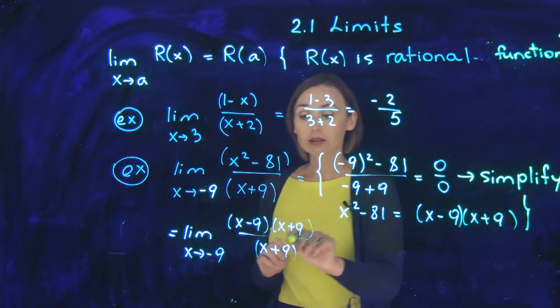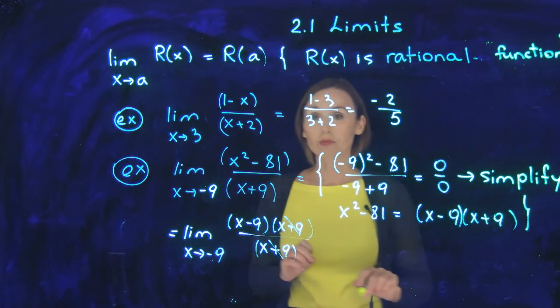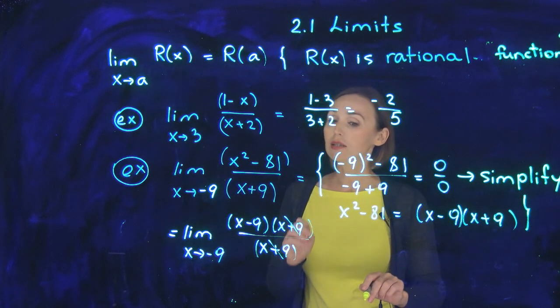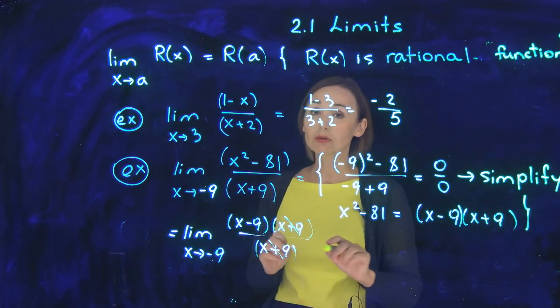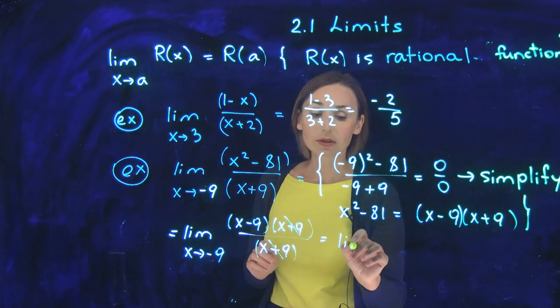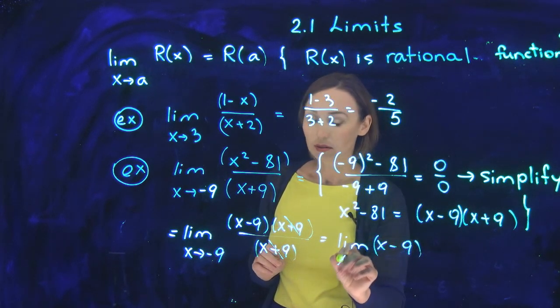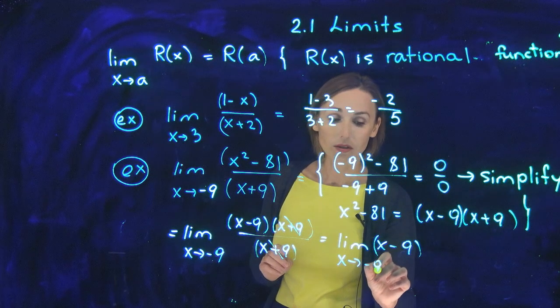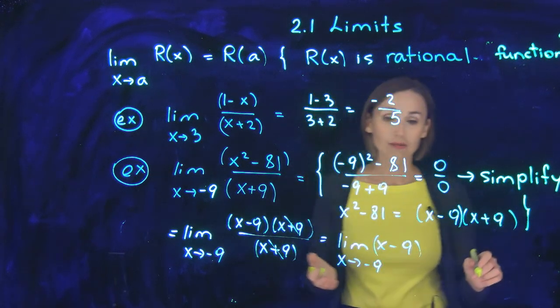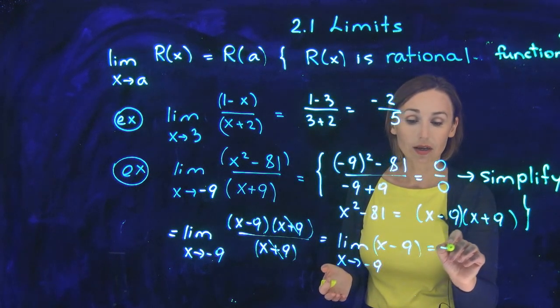I have common factor x plus 9 in the top and in the bottom. And my rational function in simplest form will be just x minus 9. So this is the limit of x minus 9 when x approaches negative 9. Now you have a limit of a linear function. Plug in negative 9, and here you are: negative 18.